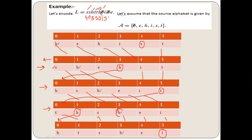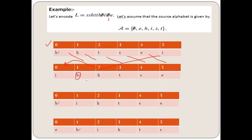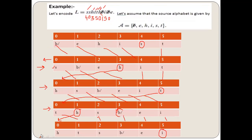Next we have b-bar. We find b-bar is at position 1, so it is coded as 1 and slid to the top. Finally, we have e. e is at the fifth position, so it is coded as 5 and moved to the top position at 0, with the remaining symbols slid down.